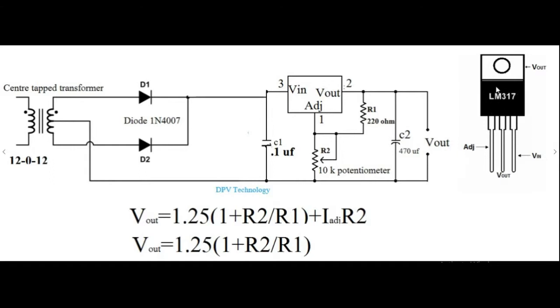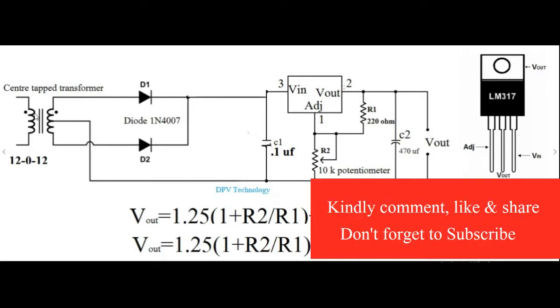So in this circuit first we are using a 12-0-12 step down transformer with maximum current of 1 ampere. You can choose your transformer according to your requirement. Suppose at the output unit you need more than 12 volts and more than 1 ampere current, then you have to choose the transformer more than 12 volts output. So here at the secondary side of the transformer we will get 12 volt alternating current.